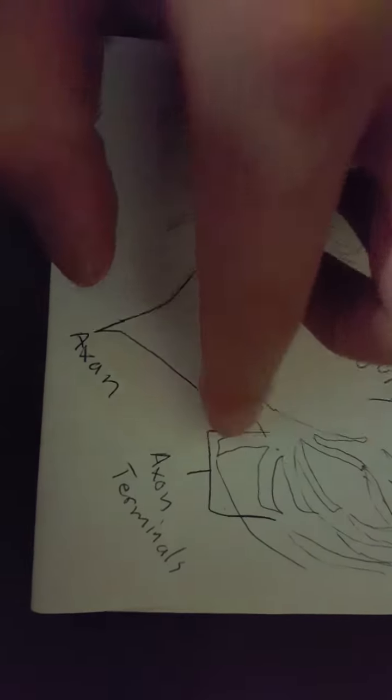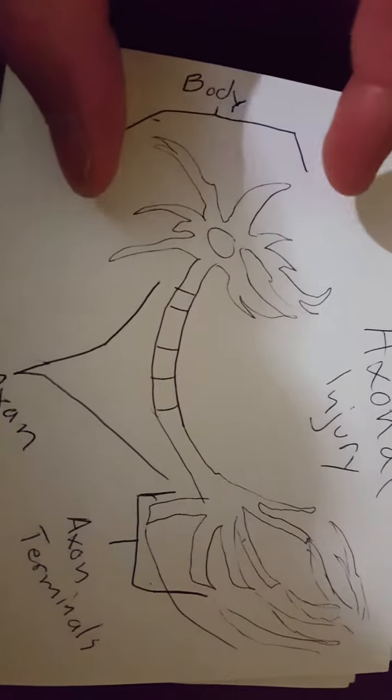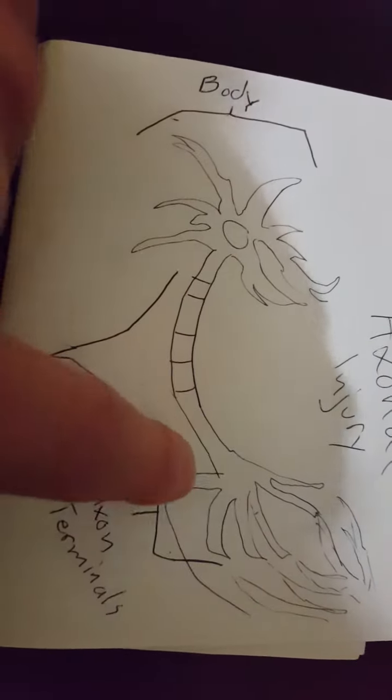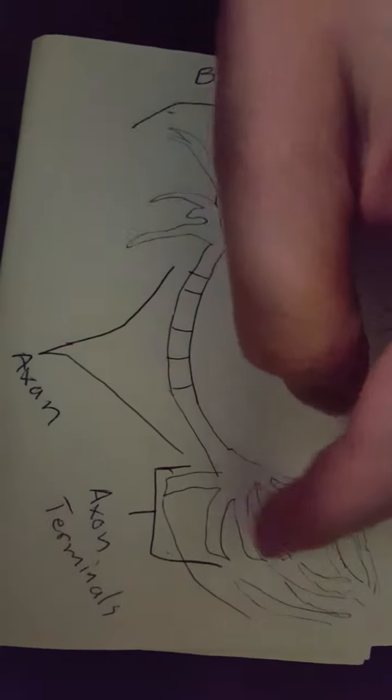This part right here is called the axon terminal. And this is where one neuron is kind of attached or linked up to a different neuron, and this is where the signal is actually sent through. Hopefully this makes sense to you guys. The body right here is the body of the neuron. Once a message or signal is generated, it will go through the axon right here to the axon terminal, which is the end of the neuron.